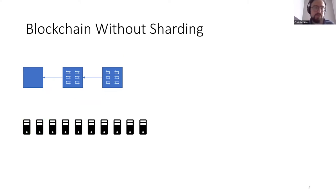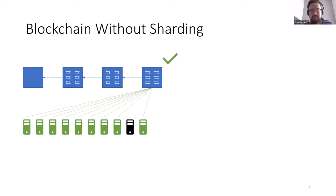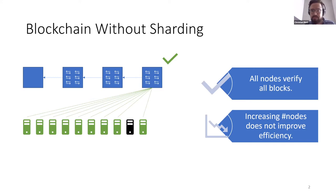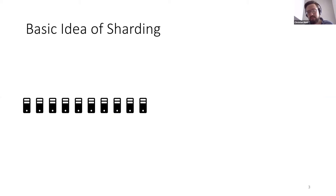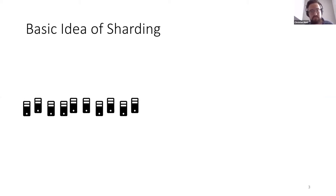If we now double the number of nodes in the system, this will not change how the protocol works — there's still one node being selected and everybody else verifies that block. So all nodes verify all the blocks. This means if you keep increasing the number of nodes, it will increase the security, because you need to compromise more nodes to bring the system down, but it will not increase the efficiency — in fact it will decrease efficiency because of overheads. Increasing security is good, but at some point it's also enough. You probably don't need 10,000 nodes to verify the same block.